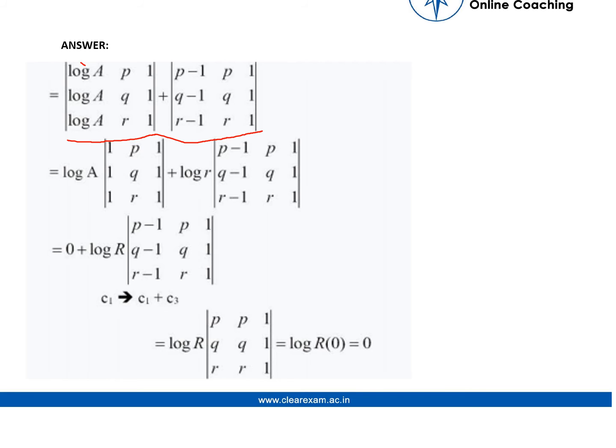If we take log A common, then we have this matrix. In this matrix, two columns are equal, so this will be a null matrix. Now if this matrix is multiplied by log R, it becomes this matrix.